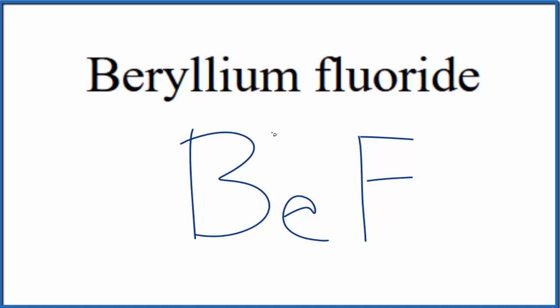Beryllium is in group 2 on the periodic table, so that'll be 2+. For fluoride, fluorine forms ions that are 1-, so we get the fluoride ion.